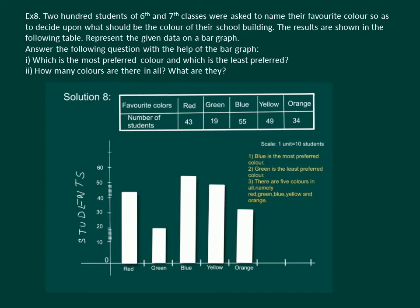Now looking at the graph we can see that the longest bar is of blue color. That means blue is the most preferred color. The shortest bar is of green color, so green is the least preferred color. And there are five colors in all, namely red, green, blue, yellow and orange.